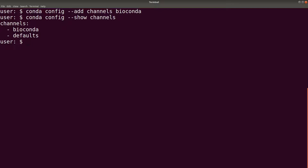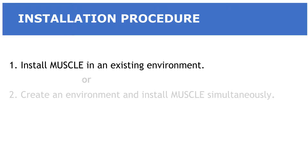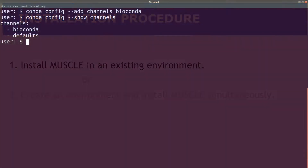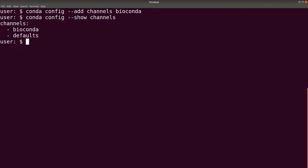After you have added your channels, you can now install Muscle. We are going to install Muscle using two approaches. The first approach: we are going to install Muscle in an existing environment. This means that we are going to first create the environment and then install Muscle in that environment.